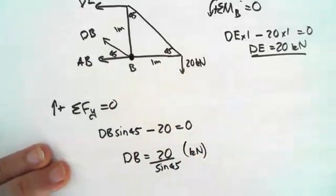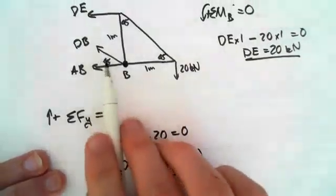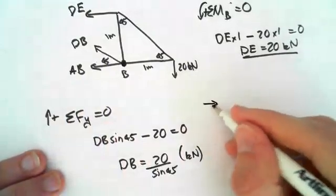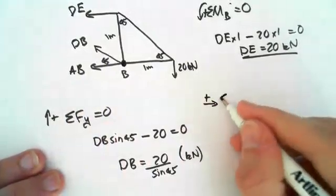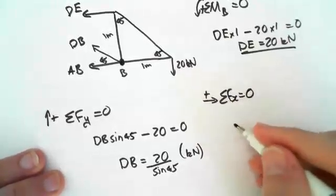And then similarly we can now do sum of the forces in the X direction, since we have the X component, we can work out the X component of this DB now. So to the right is positive, so sum of the forces in the X direction equals zero.